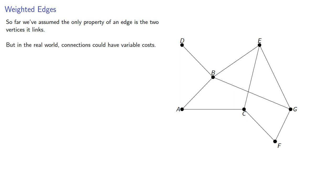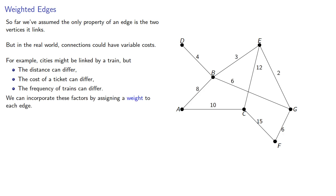For example, cities might be linked by trains, but distances can differ, the cost of a ticket can differ, the frequency of trains can differ. We can incorporate these factors by assigning a weight to each edge.